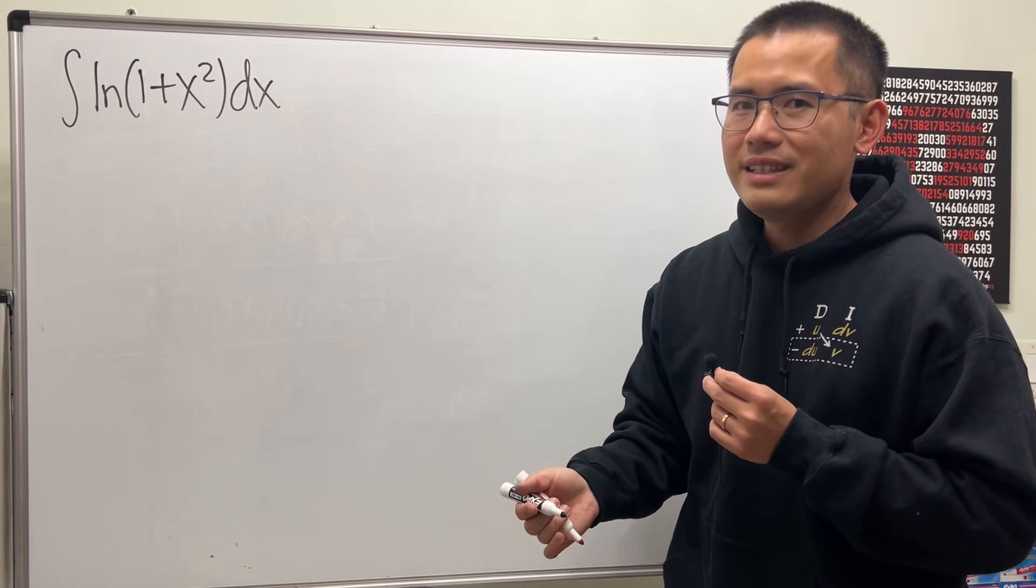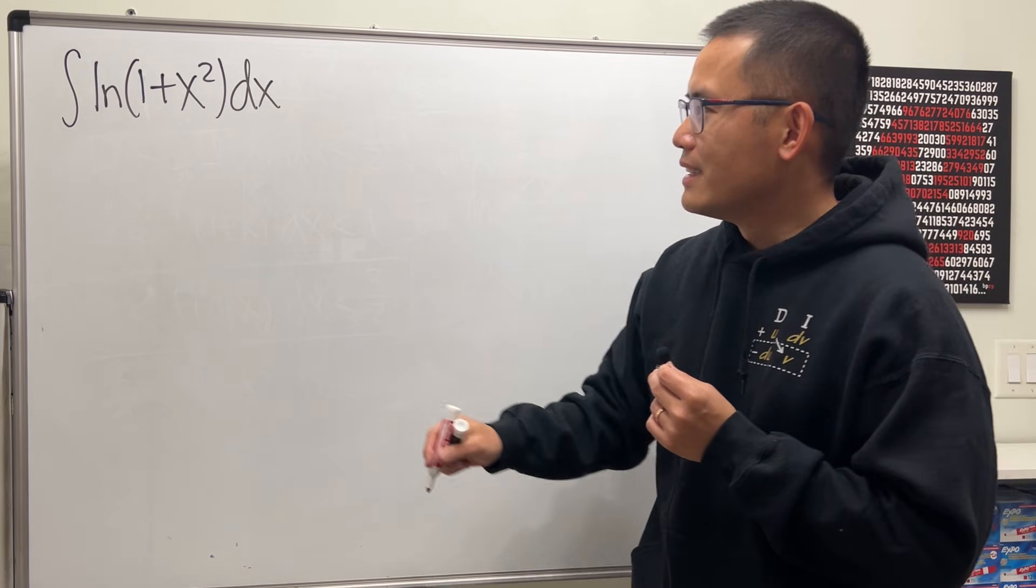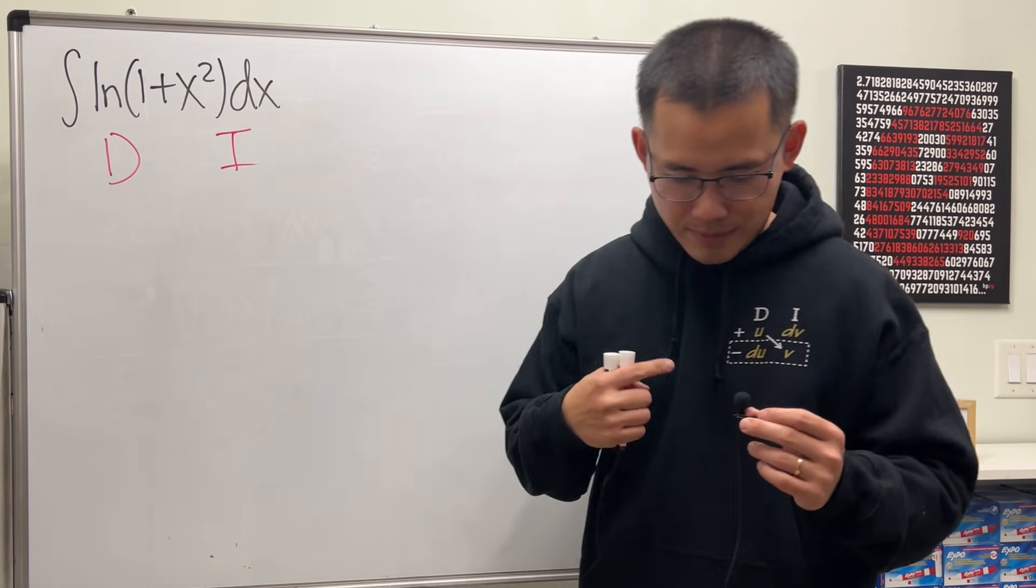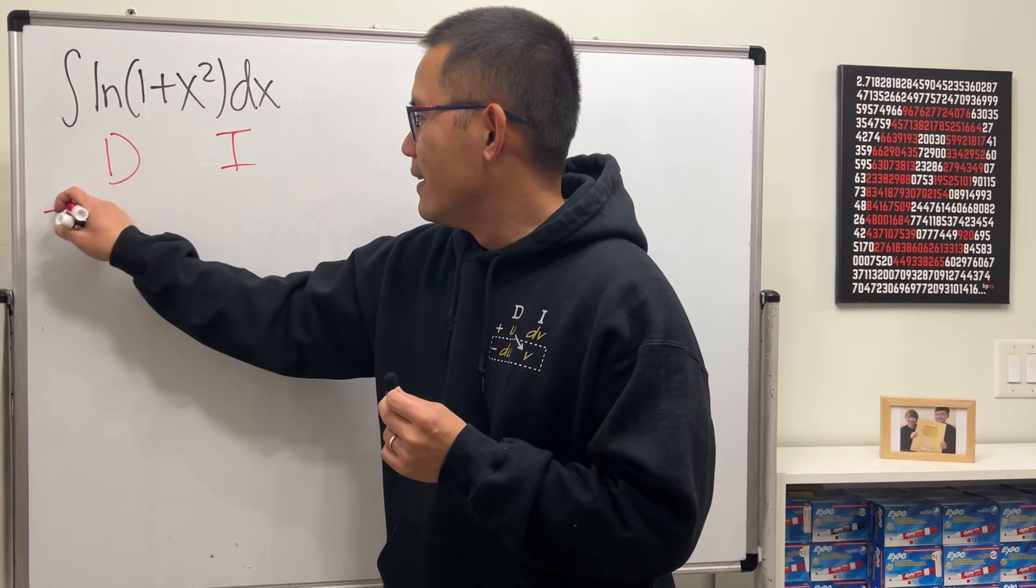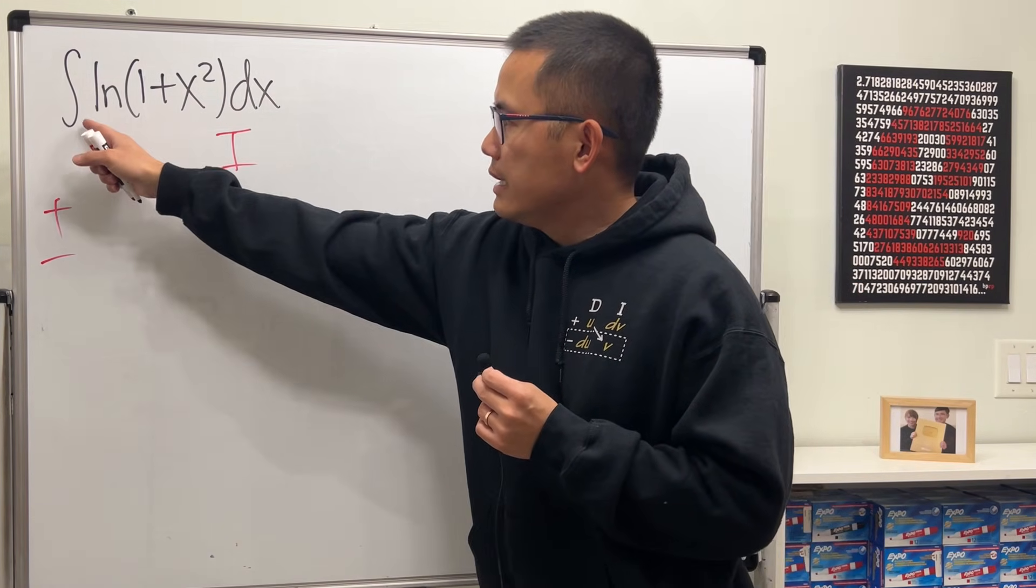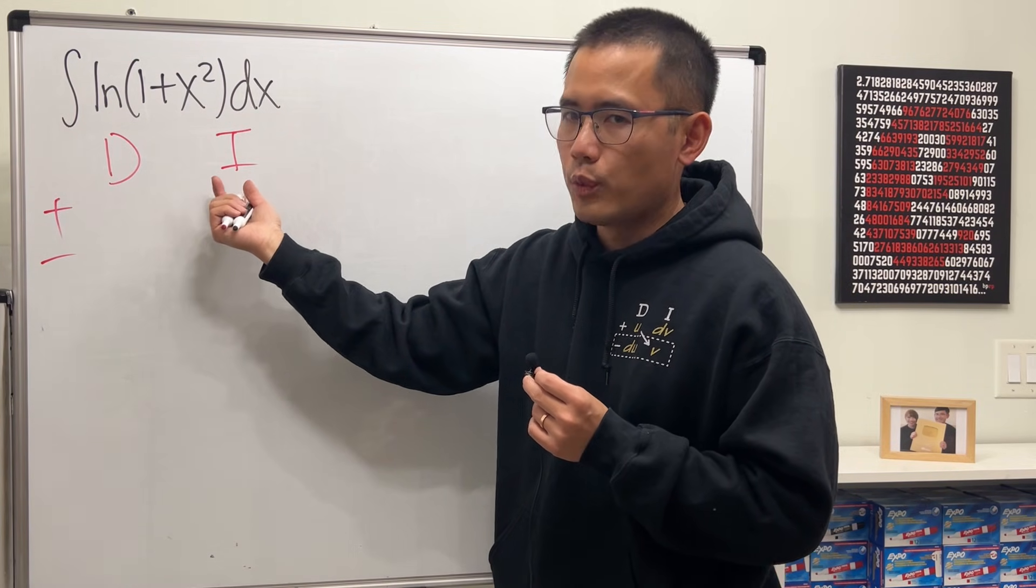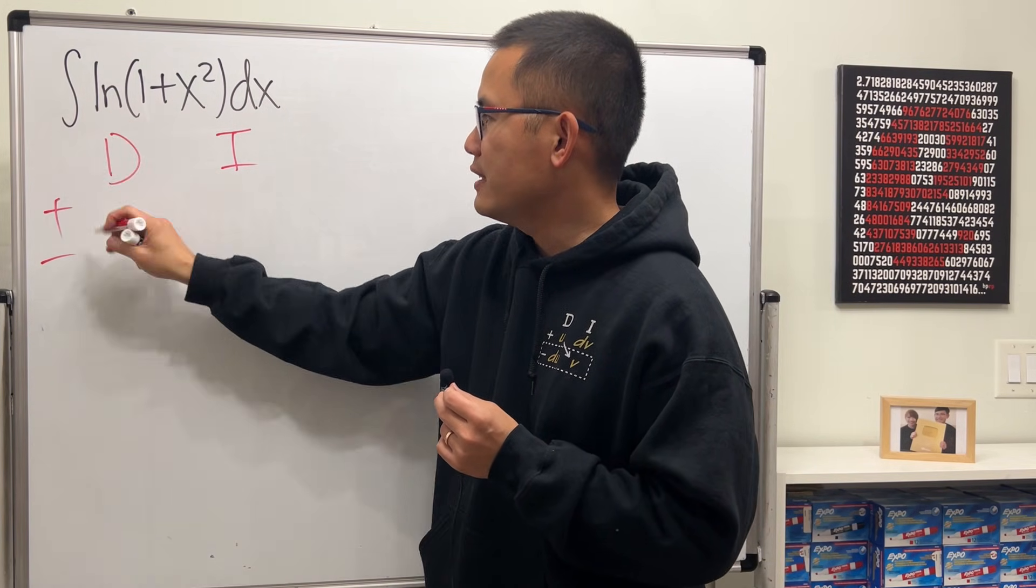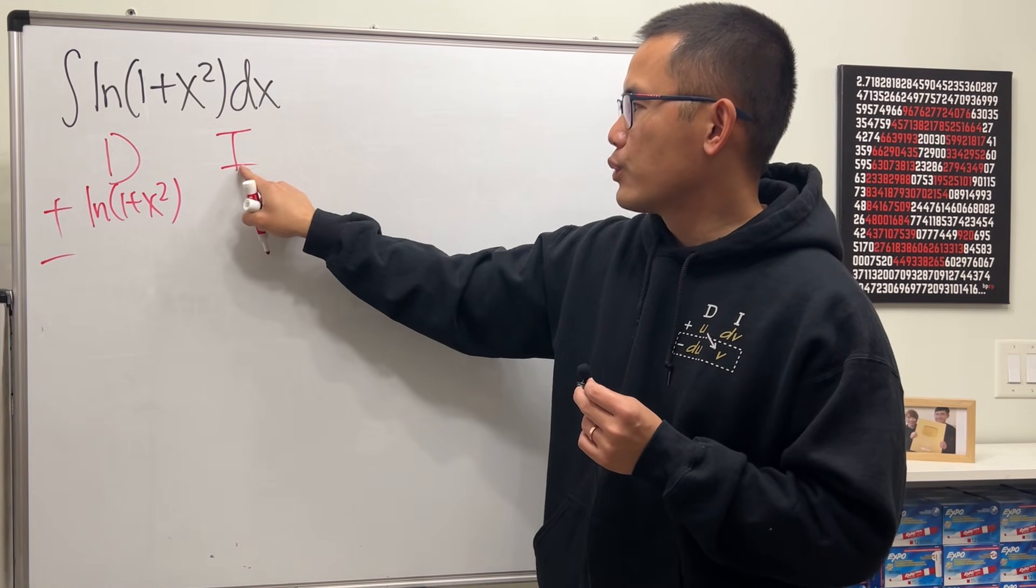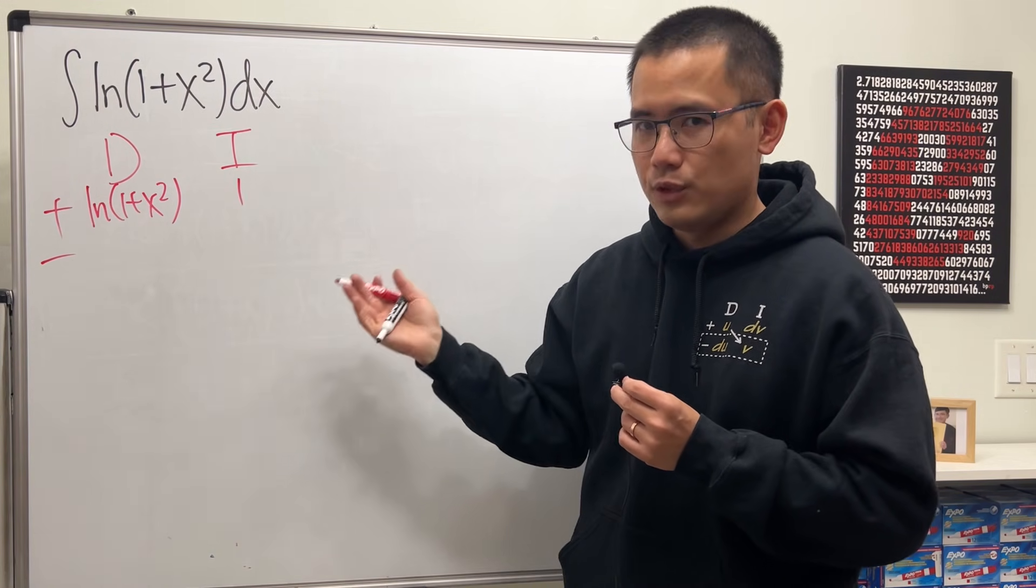So why don't we try integration by parts? Here's the deal. Of course, we will be using the DI setup right here. Plus, minus on the side to get ready. Instead of integrating this thing, why don't we try to differentiate it? So ln of 1 plus x squared, and then we will just integrate 1 and then see what happens.